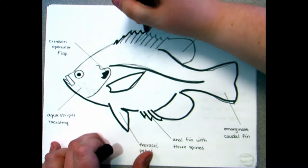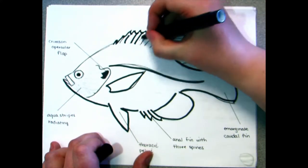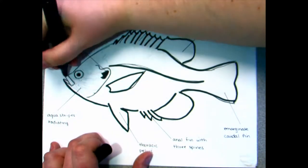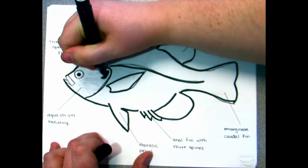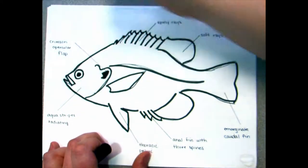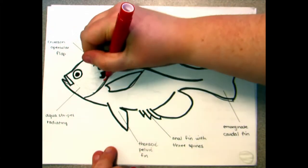They have thoracic pelvic fins and their pectoral fins are just below the midline of the body for stability. Pumpkin seed have long joined dorsal fins consisting of 10 to 11 spines and 10 to 12 rays. Their anal fin has three spines and 10 to 11 rays, and their caudal fin is a marginate homocercal.